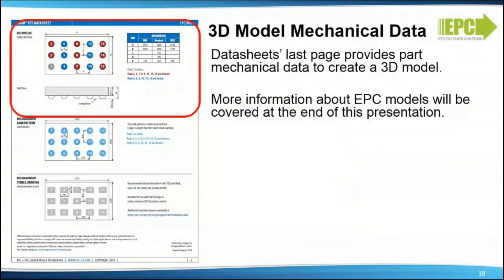3D model mechanical data: the datasheet's last page provides part mechanical data to create a 3D model. When EPC begins to offer independent 3D models of its products, they will be found on the device model webpage. Currently, 3D models are only available within the EPC Altium library, available on the same webpage. More information about the EPC model page will be covered at the end of this presentation.